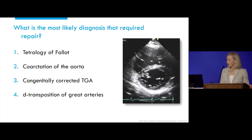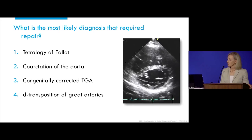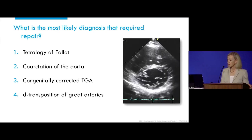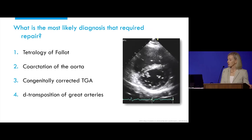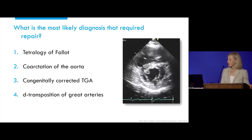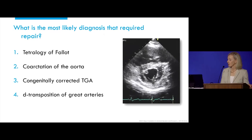So what is the most likely diagnosis that required repair in this patient? Tetralogy, coarctation, congenitally corrected transposition, or d-transposition of the great arteries?